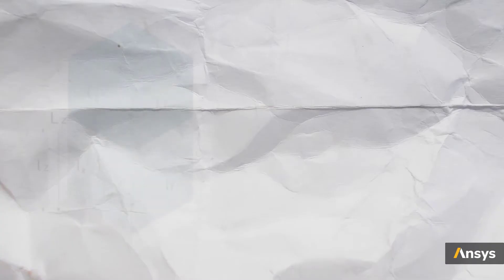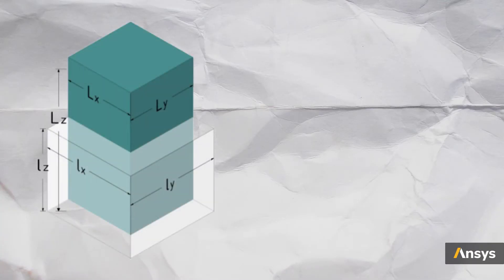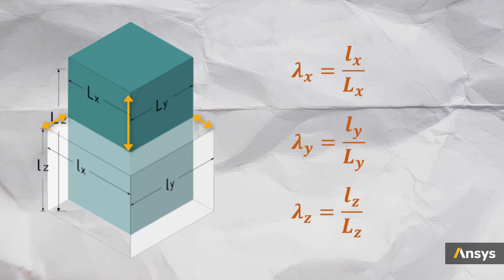This can be done in two ways. The first method uses principal stretches. Let's start with this cube with sides of size L being stretched in one direction. When it is stretched to a size Ly, the cube will shrink in the other two directions to conserve the volume of the component due to incompressibility. The ratios of the final length of the cube to its initial lengths are called the principal stretches.